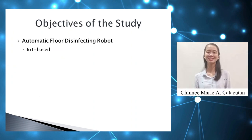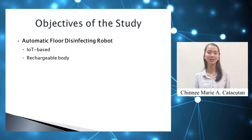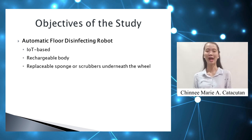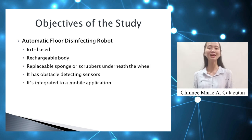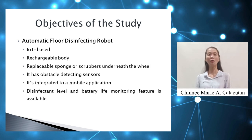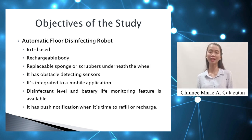Let's now discuss the objectives of this study. The automatic disinfecting robot is IoT-based. It includes a rechargeable body traveling automatically on the surface to disinfect. It has replaceable sponges or scrubbers underneath the wheel that serve as a swiffer of the disinfectant, and obstacle-detecting sensors positioned in front of the body to detect obstacles ahead of the traveling direction. By carrying a disinfectant, it also has a push notification feature that lets the user know when it's time to refill or return.